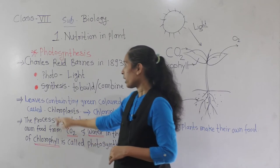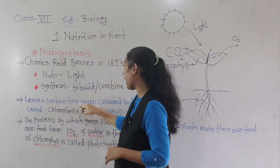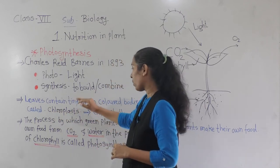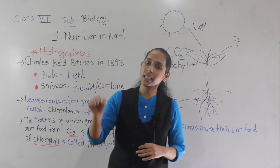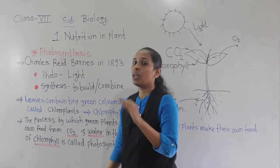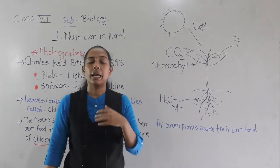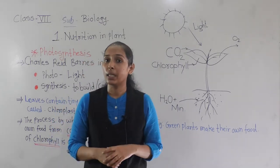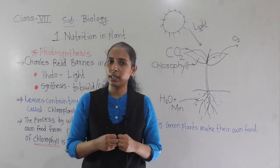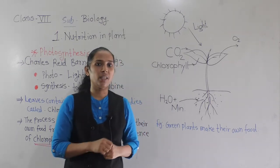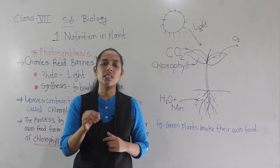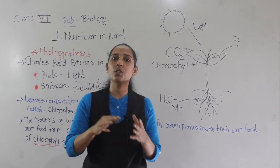Leaves contain tiny green color bodies called chloroplasts, and those chloroplasts contain a green color pigment that we call chlorophyll. The green plants' leaves are the part that makes their own food, which is why leaves are called the food factory of a plant, or the kitchen of the plant.